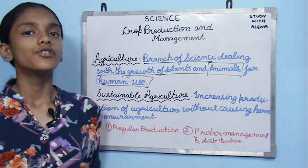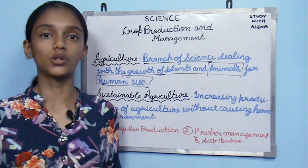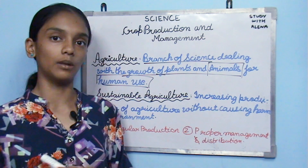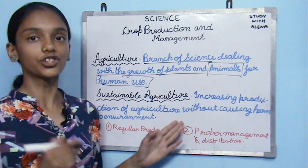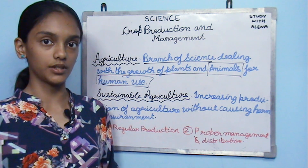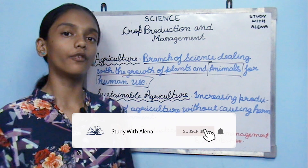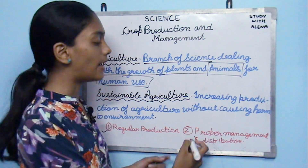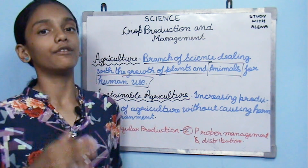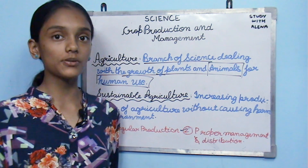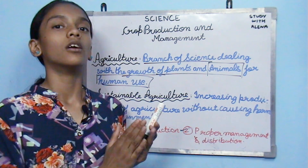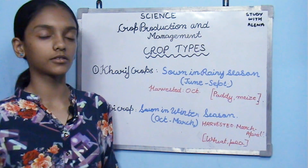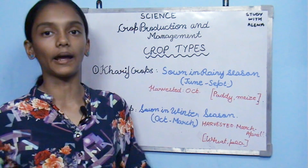Next is sustainable agriculture. In Class 8 Geography, Chapter 1 on Resources, we learned about sustainable development — this is similar. In sustainable agriculture, we increase production without causing harm to the environment. To provide food for a large population, we need to maintain regular production, proper management, and distribution.